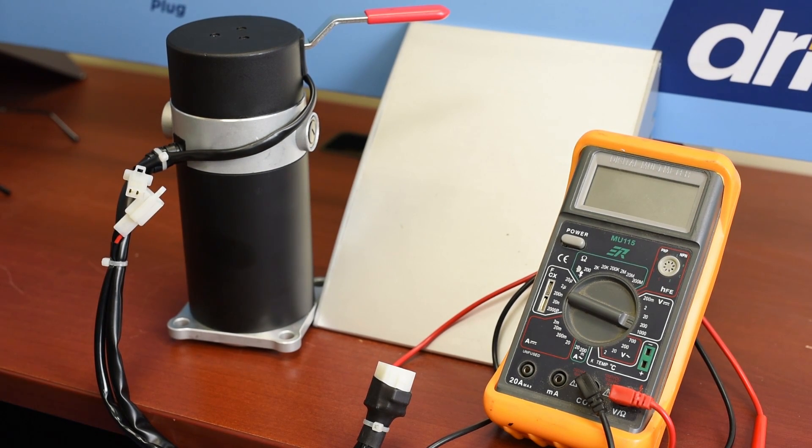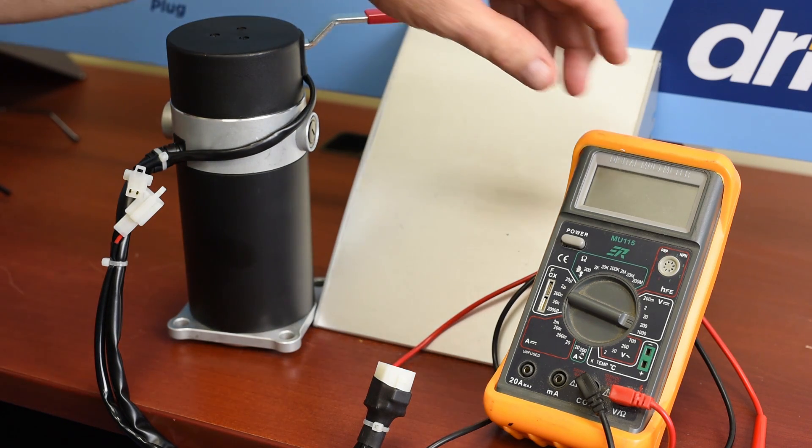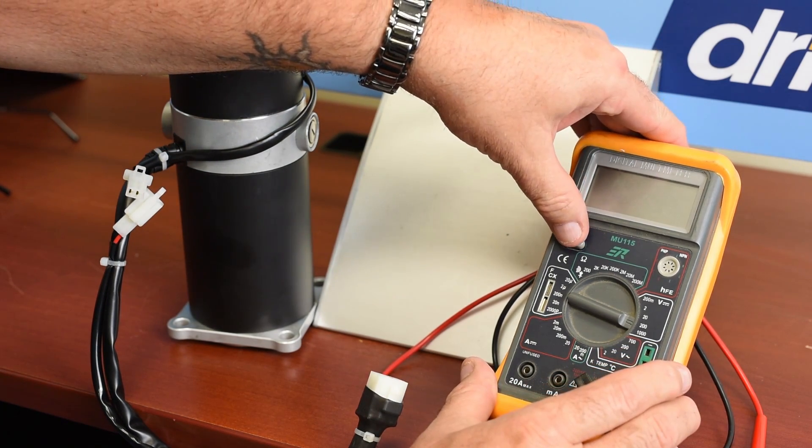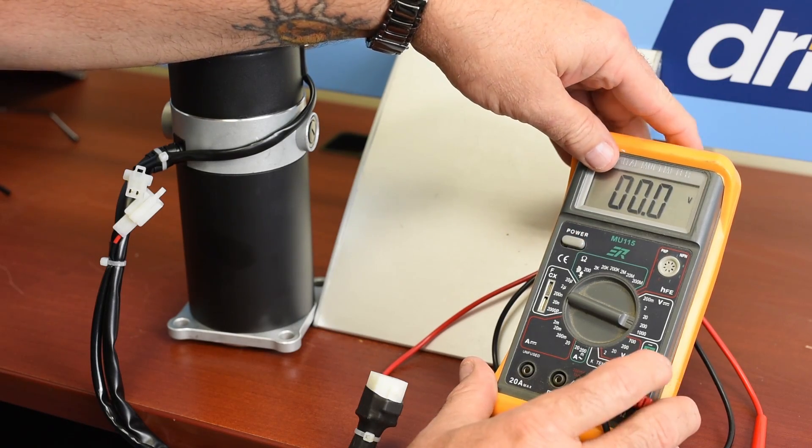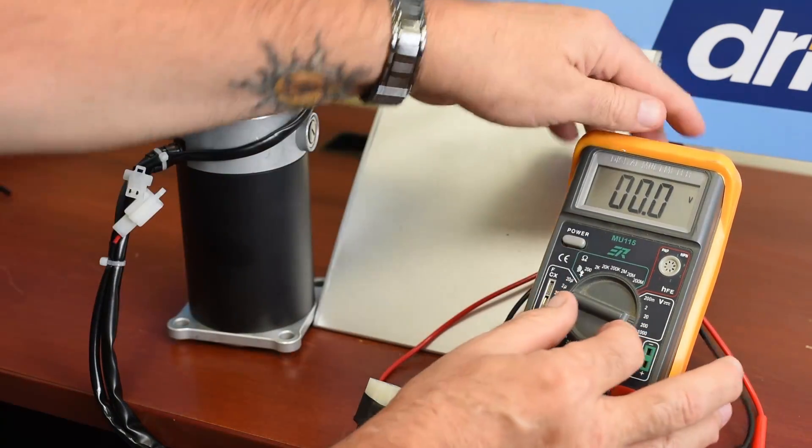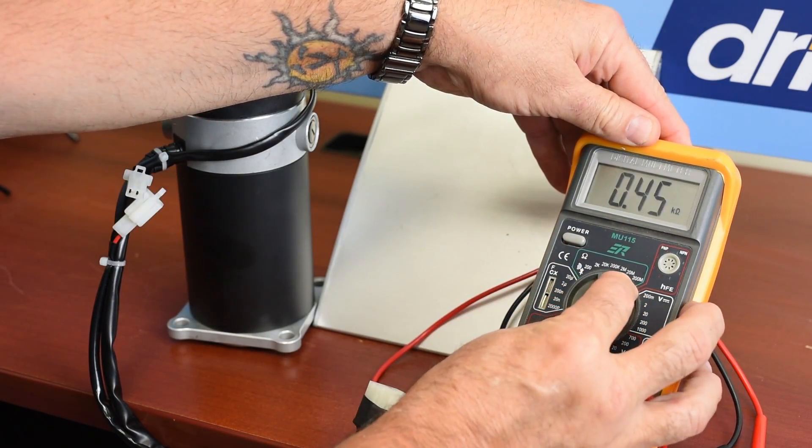It's a very simple test and I'll show you now how we do it. First, we'll turn on our test meter and put it onto the 200 ohm scale.